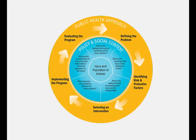As you remember from the CIPC lessons, the public health approach consists of defining the injury problem, identifying risk and protective factors, and selecting an intervention to reduce the injury burden. Implementation is the fourth stage of the public health approach; however, laying the groundwork for implementation planning occurs throughout the entire process.